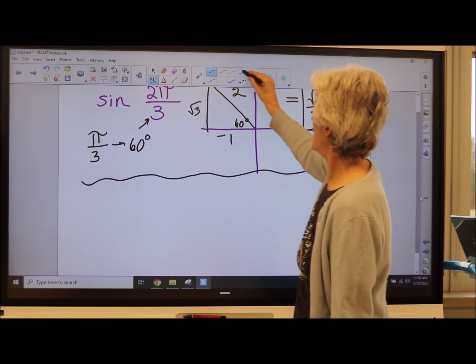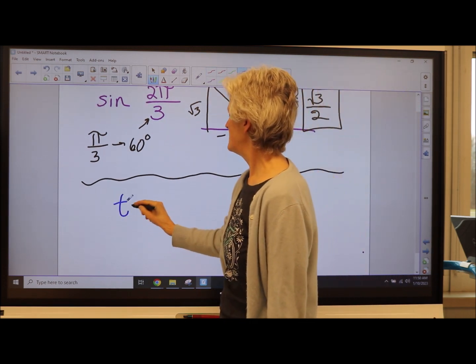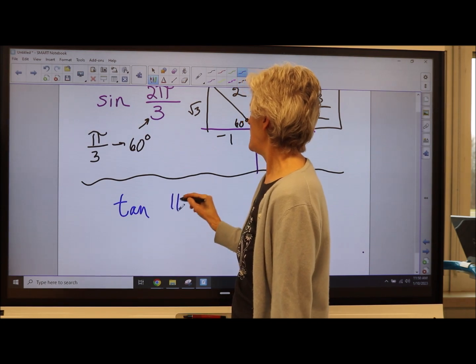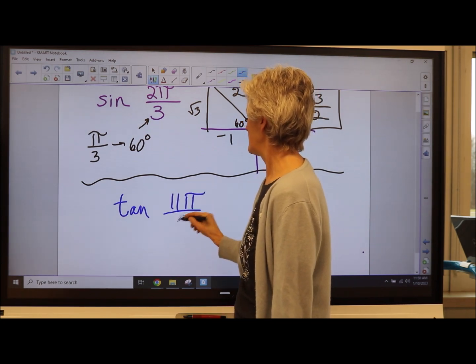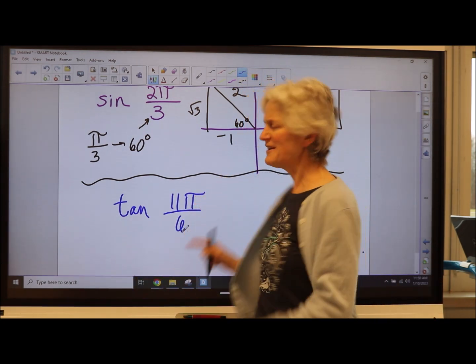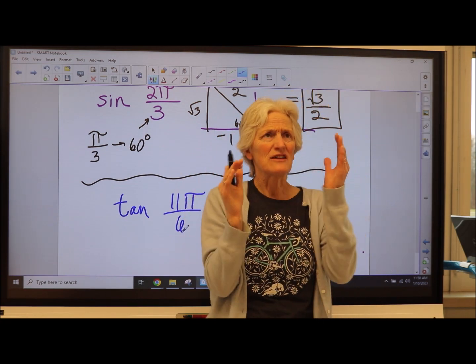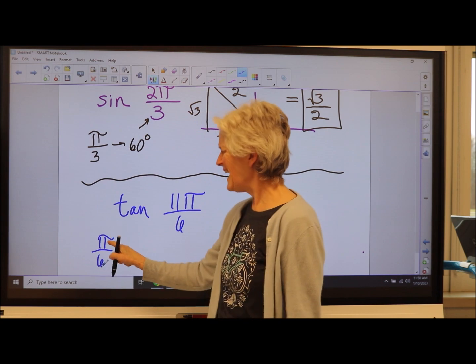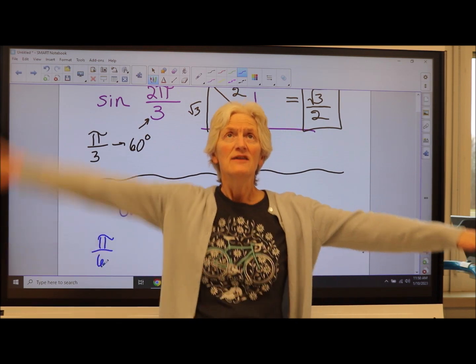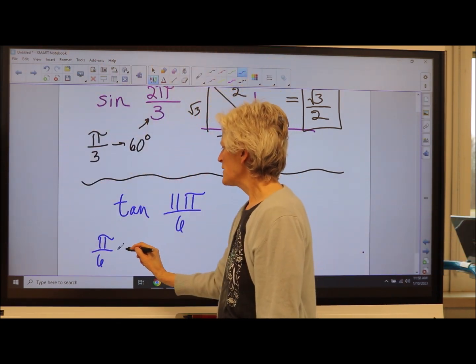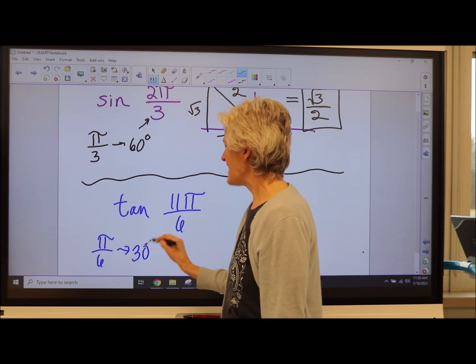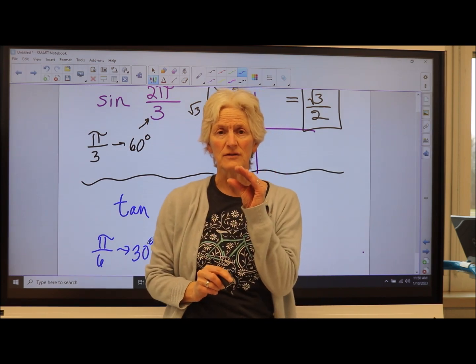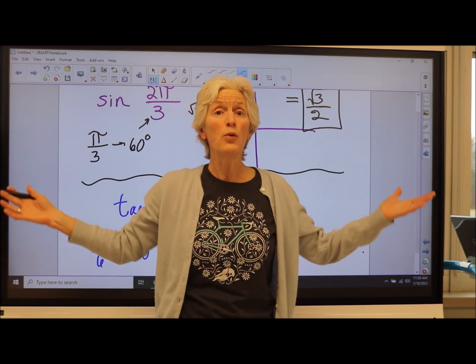What if I'm doing the tan of 11 pi over six? Okay. I look at the denominator, it's a six. What's a six of pi? Well, pi is the same as 180. That's 30 degrees. So I know my reference angle is going to be 30 degrees. All I have to figure out is what quadrant I'm in.